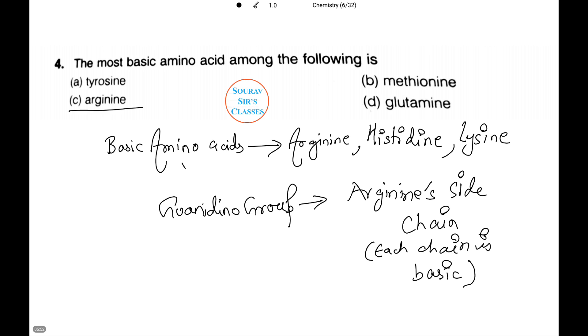The answer is C, arginine. Basic amino acids are arginine, histidine, and lysine. The side chain of arginine is basic, that is, it can accept a proton. The guanidino amino group in arginine side chain is the most basic among all the other amino acids.